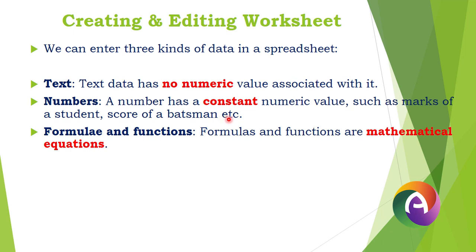The second kind is numbers, which are constants — that is numeric values. Numbers include 0 to 9 and combinations with symbols. For example, a student's mark is a constant value, or a batsman's score in cricket — if you change the score, that is a constant value. These are numbers.